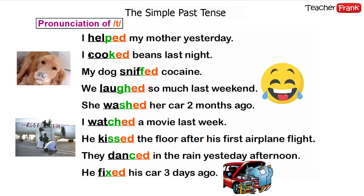More examples of the T pronunciation: "I helped my mother yesterday." "I cooked beans last night" — "cooked", T sound. "My dog sniffed cocaine" — T sound. "We laughed so much last weekend" — "laughed", T sound. "She washed her car two months ago" — "washed", T sound. "I watched a movie last weekend" — T sound, with a CH sound. "He kissed the floor after his first airplane flight" — T sound. "They danced in the rain yesterday afternoon" — T sound. "He fixed his car three days ago" — T sound.